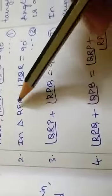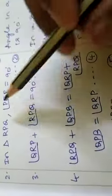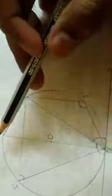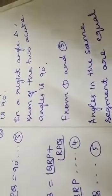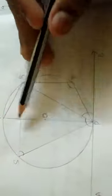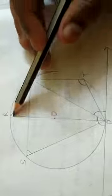In triangle RPQ, angle PQR equals 90 degrees because the angle in a semicircle is 90 degrees. Since one angle is 90 degrees, by the angle sum property the other two angles add up to 90 degrees: angle QRP plus angle RPQ equals 90 degrees.